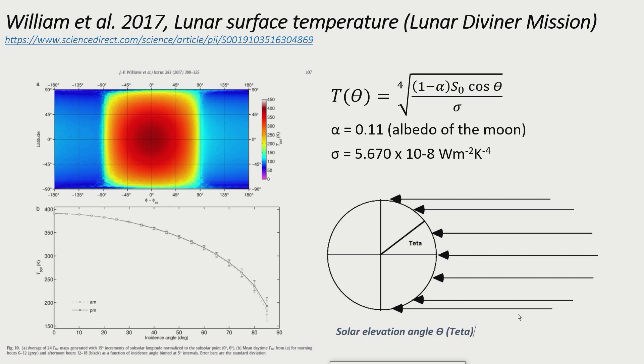Near the poles, the solar elevation angle, theta, approaches 90 degrees. This means that the cosinus theta approaches zero and very little power is radiated. The surface there is then very cold.